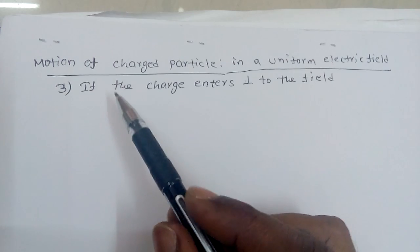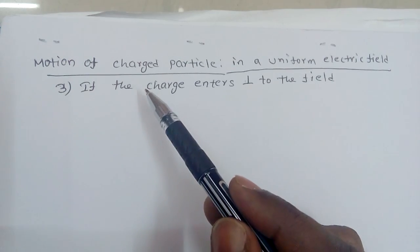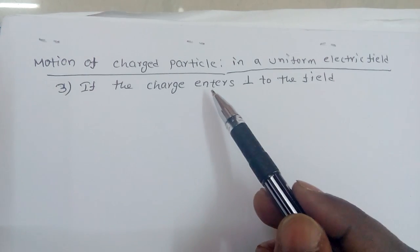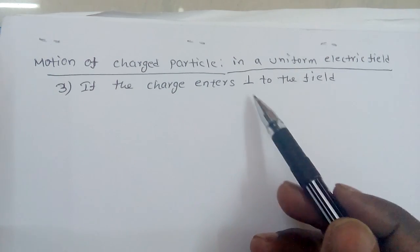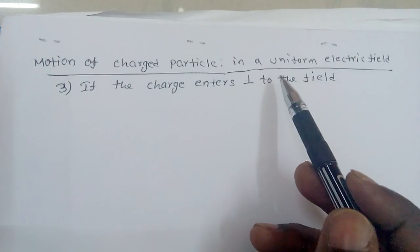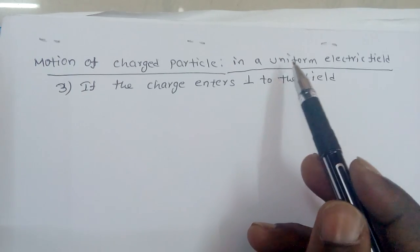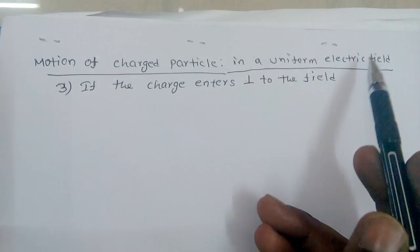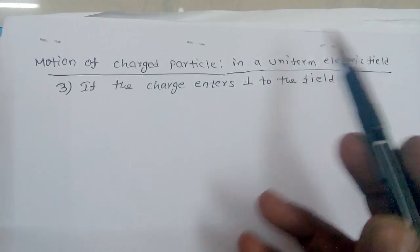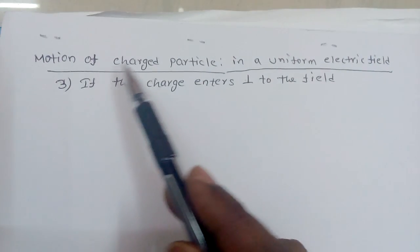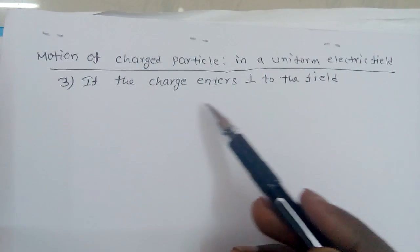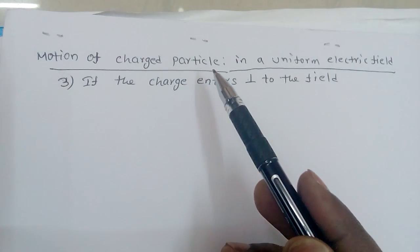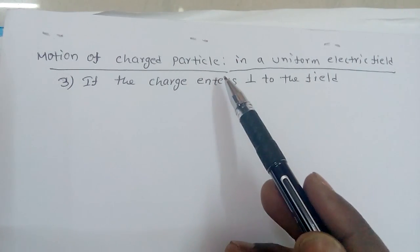Our new case is: if the charged particle enters perpendicular to the electric field. The charge is entering into the field perpendicularly, and we are considering a uniform electric field. While discussing this motion, we are not taking gravitational force into account — only the electric field is considered; gravitational field is neglected.